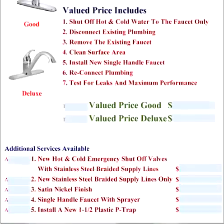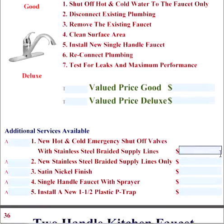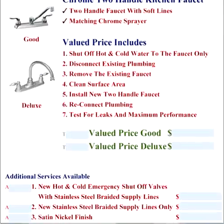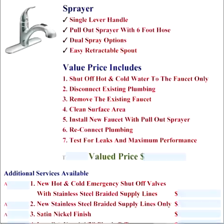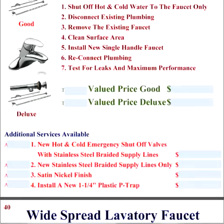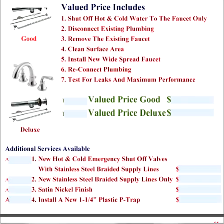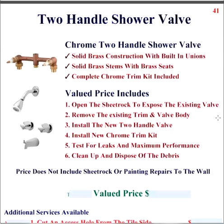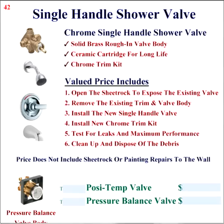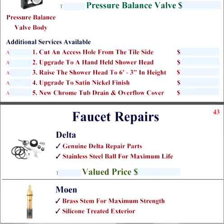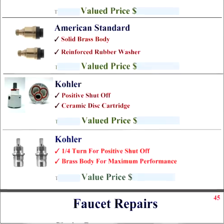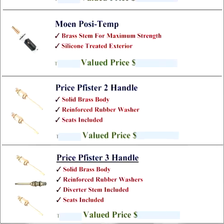Our faucet install — we offer good and deluxe. Customers can upgrade to a satin nickel finish, and add supply lines and angle stops. For two-handle faucets, same thing — good and deluxe. Pull-out sprayer as well. Shower valves — we offer two-handle, with an additional task to upgrade to a three-handle. Our single-handle options include Positemp and pressure balance. We also go quickly through faucet repairs, covering the most common ones you'll run into in the field, plus tasks for specialty order items or items not on your service truck.